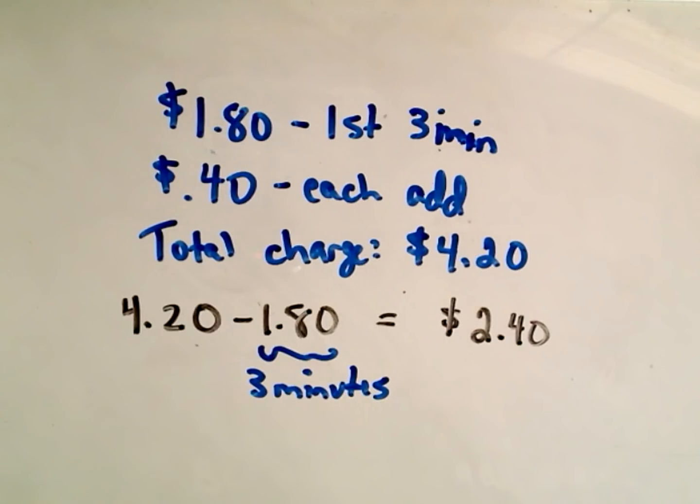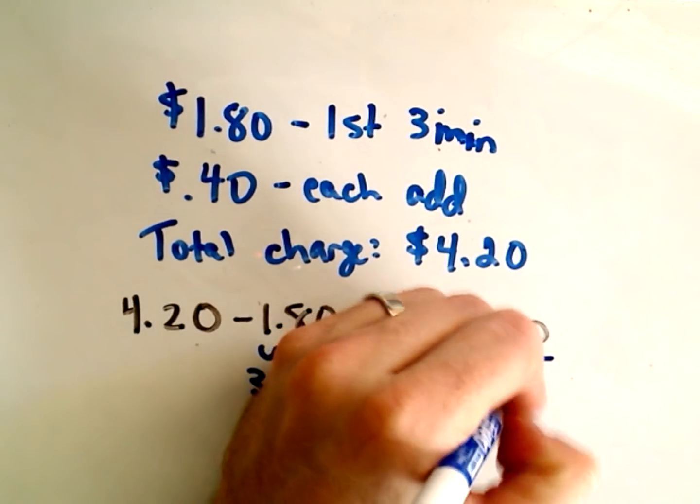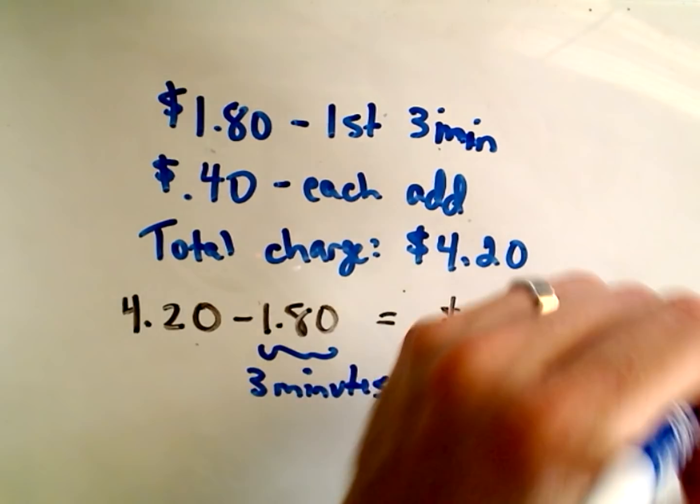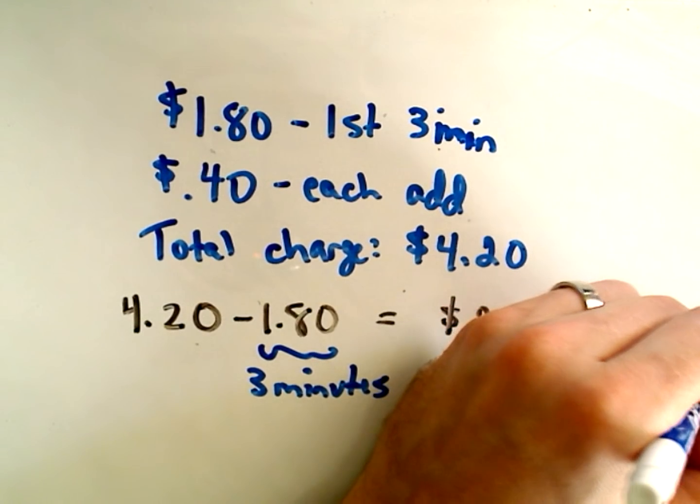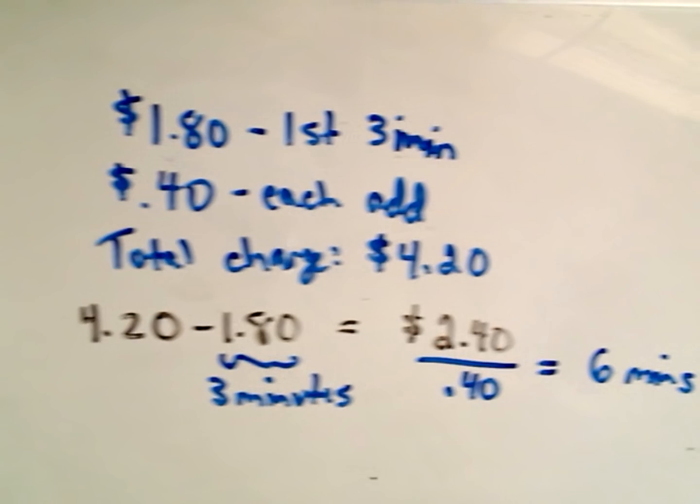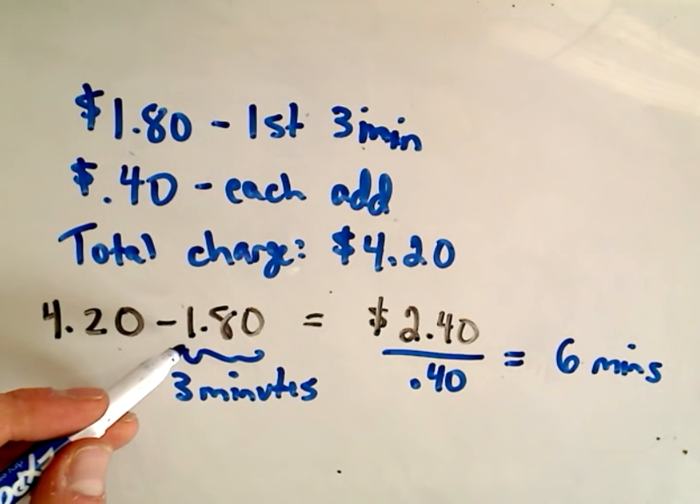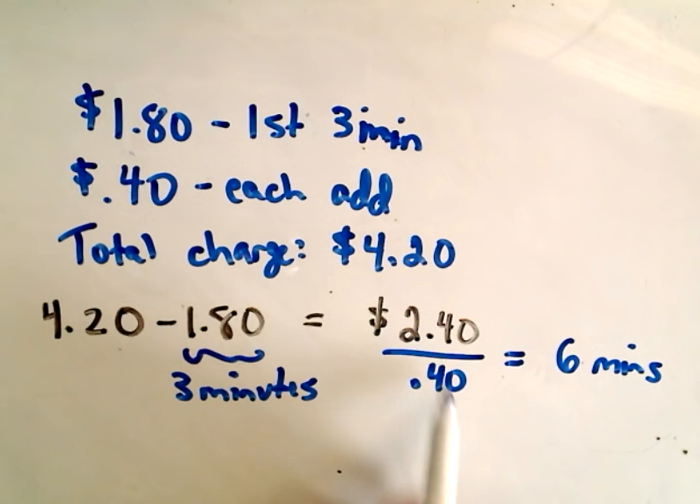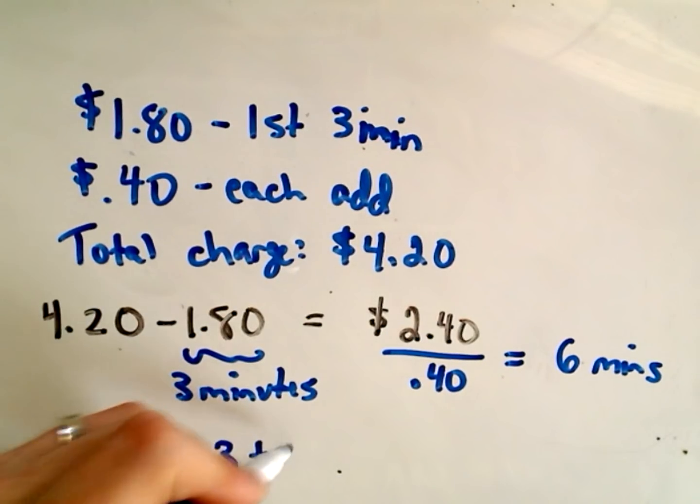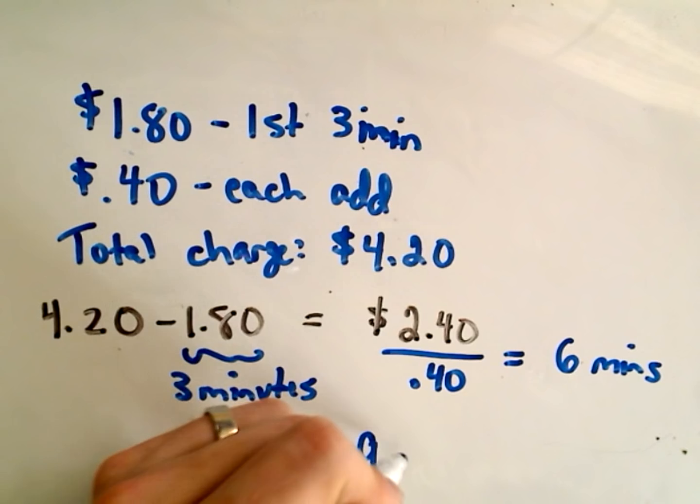Well, if those phone calls, if those minutes now cost 40 cents each, that's going to give us a total of six minutes extra. So, we talked for three minutes that cost us $1.80 and another six minutes at 40 cents each, which adds up to $2.40. So, we talked for a total of nine minutes.